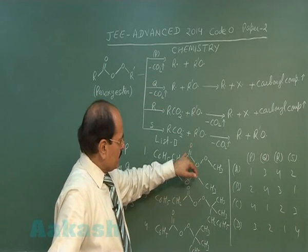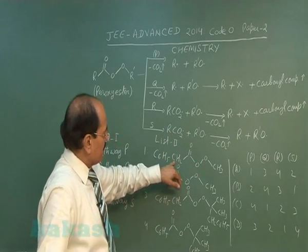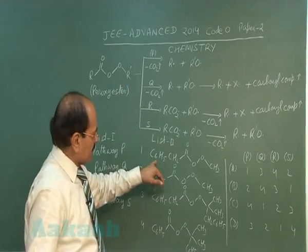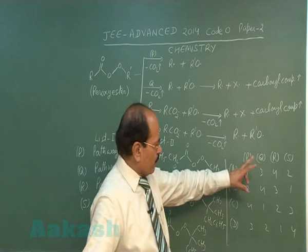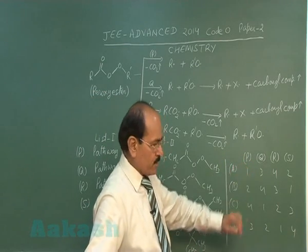The carboxyl radical, being unstable, will lose carbon dioxide gas, giving rise to a benzyl radical. So path P matches with the first option of list two. Out of the four options given, option A says P matches with one.